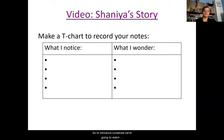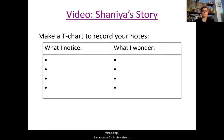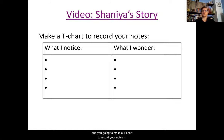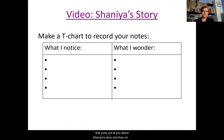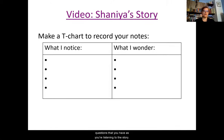To introduce ourselves, we're going to watch Shania's story. At the time of this video, Shania is a 16-year-old high school student in Batesville, Mississippi. It's about a five-minute video. As you watch, take that scrap piece of paper or notebook and make a T-chart to record your notes. On one side, write what you notice — things that jump out at you about Shania's story. On the other side, write what you wonder — questions you have as you're listening.